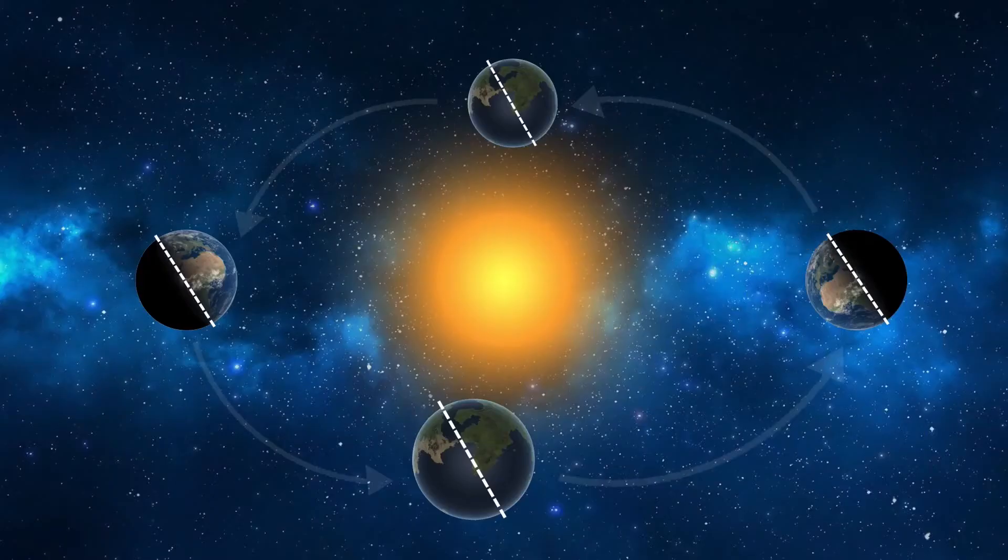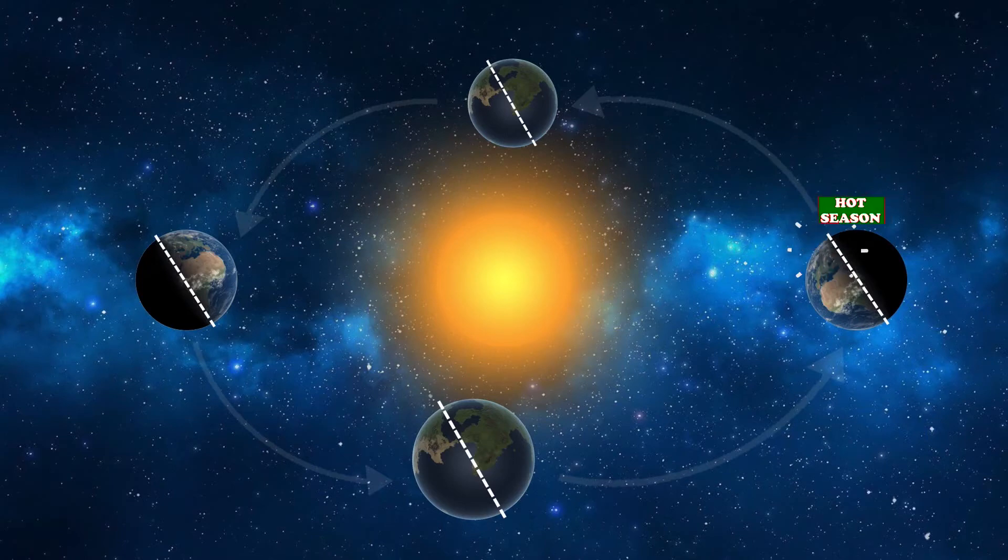When the part of the world you're living in is closer to the sun, the days are longer and they're warmer. This is the hot season. When you're on the part that's actually leaning away from the sun, the days are shorter and it's colder.